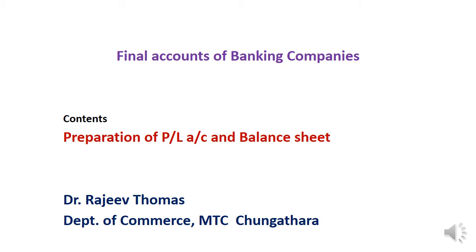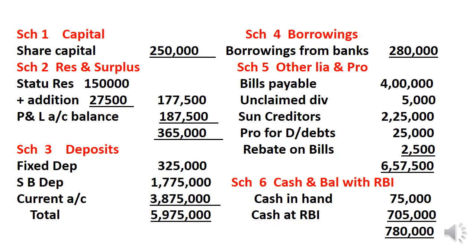This is the solution. Schedule 1 — Capital. Schedule 2 — Reserves and Surplus: Statutory Reserve Opening Balance, Addition 27,500. Then Profit and Loss Account balance — balancing figure. Schedule 2 complete. Schedule 3 — Fixed Deposit, Savings Bank, Current Account.